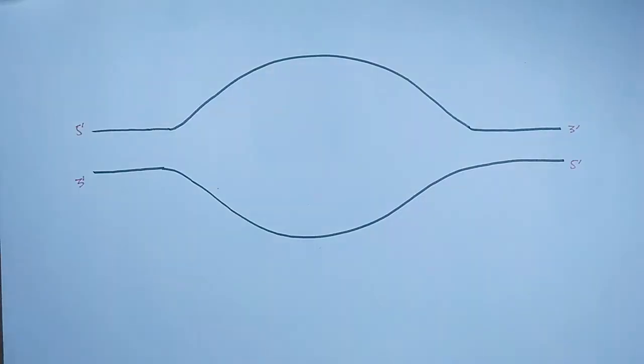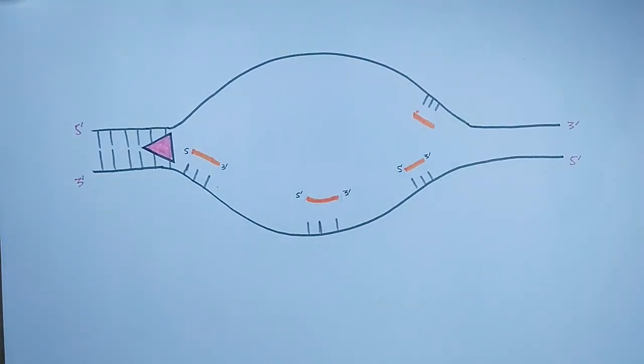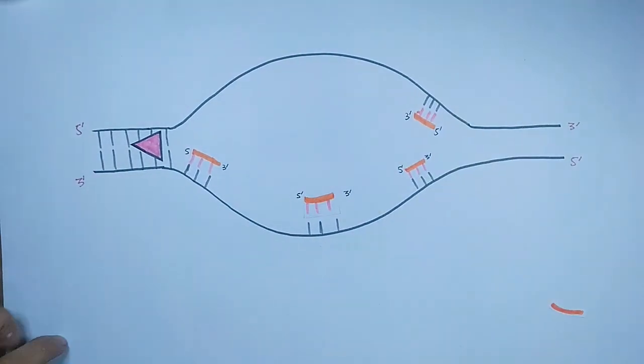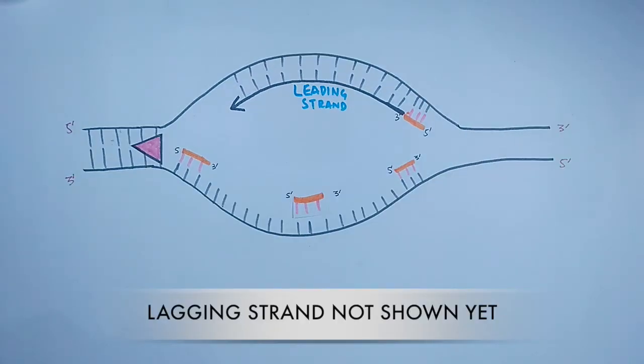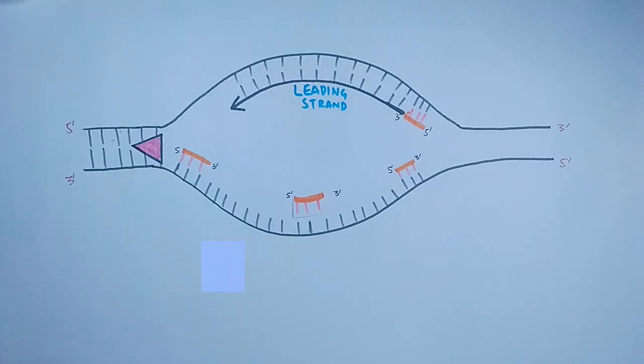Now there is a problem in the lagging strand synthesis which can be illustrated in the following diagram. You see we have a DNA molecule here. The upper strand is the leading strand and the lower strand is the lagging strand. You see these are the primers. The Okazaki fragments are made with the flaps in the end. And how these flaps are made?